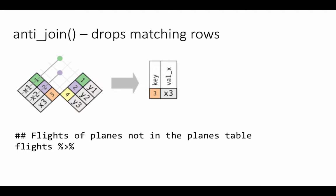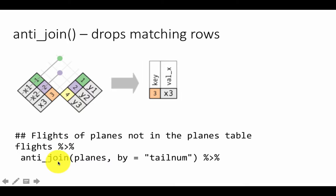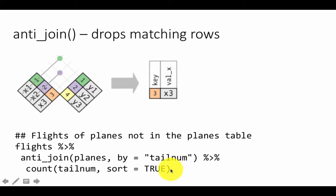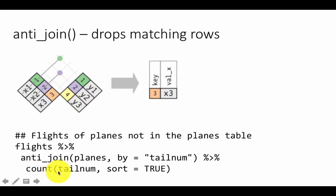Let's see if that is actually true. We are trying to find flights of planes which are not in the planes table, so you can do: flights anti-join planes by tailnum. In other words, find all those rows in flights whose tailnum doesn't exist in the planes table. Then we are counting how many times this is happening for each tailnum — counting how many flights occurred for each of those tailnums.